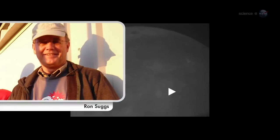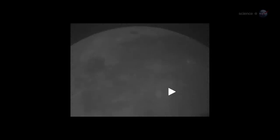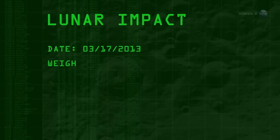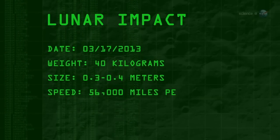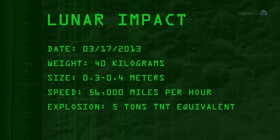Ron Suggs, an analyst at the Marshall Space Flight Center, was the first to notice the impact in a digital video recorded by one of the monitoring program's 14-inch telescopes. It jumped right out at me. It was so bright, he recalls. The 40-kilogram meteoroid, measuring 0.3 to 0.4 meters wide, hit the Moon traveling 56,000 miles per hour. The resulting explosion packed as much punch as five tons of TNT.